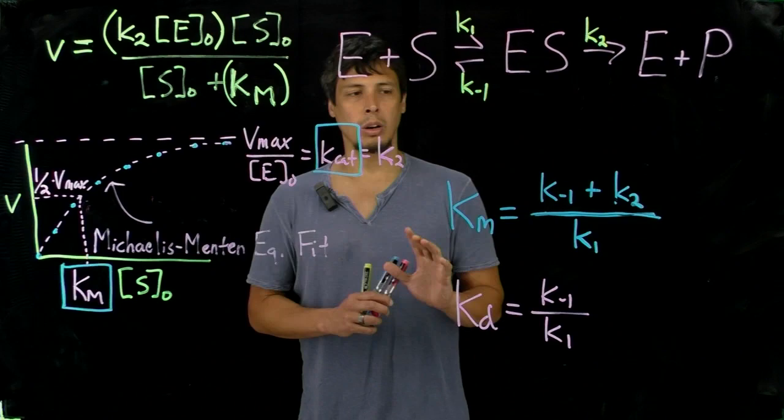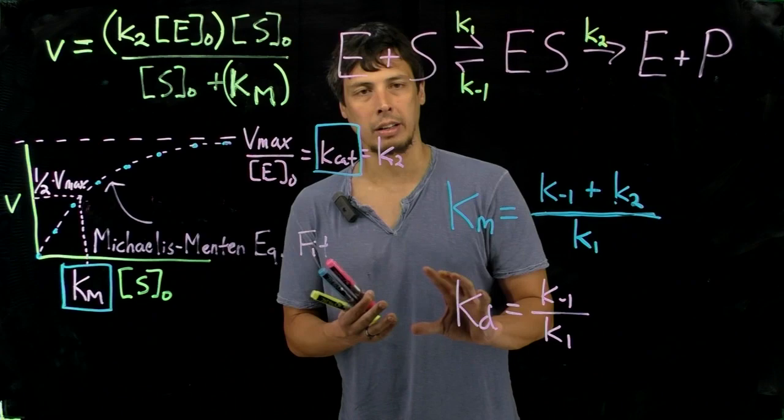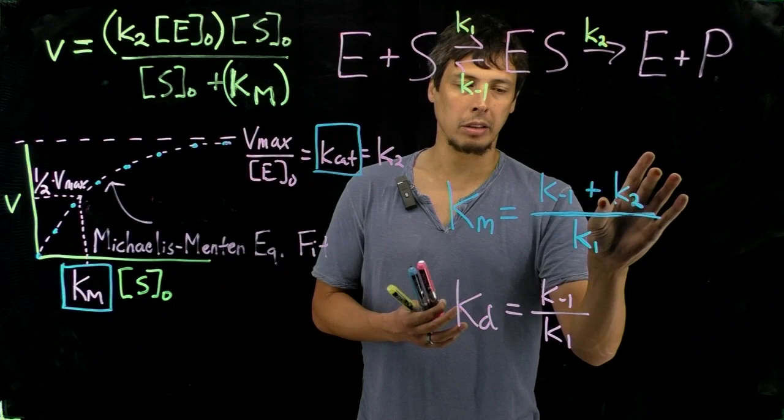you have this third term, K2, which is going to affect the numerator. And so, that can really affect what that, that can really affect if K2 is much larger than, for instance, then this is going to dominate the numerator.